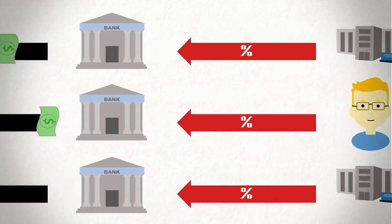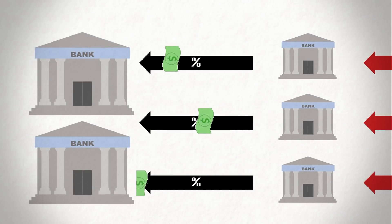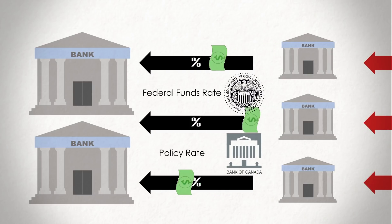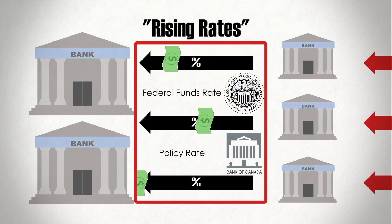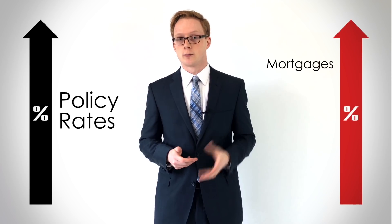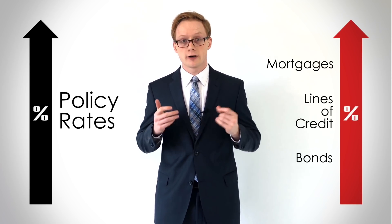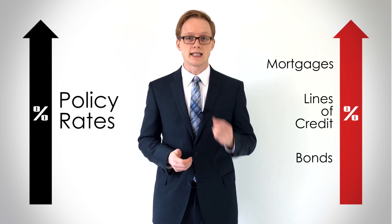The rate that commercial banks charge one another on these overnight loans is based on what's called the Federal Funds Rate, or the Policy Rate in Canada, which are set by the respective central banks. And when you hear about rising rates, these are typically the numbers journalists are referencing. These rates have far-reaching impacts on business activity, because they essentially underline all of the loans in the country. As they go up, so too do interest rates for mortgages, lines of credit, and even company bonds. So they are important metrics to watch when gauging our economy.